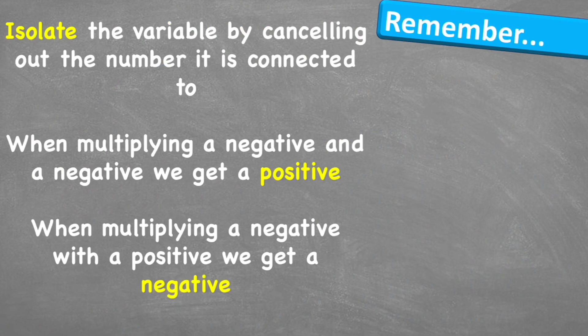And there we go. Let's look at things to remember. Our first step is to isolate the variable by cancelling out the number it's connected to using the inverse. When multiplying a negative and a negative, we end up with a positive. But when multiplying a negative with a positive, we end up with a negative.